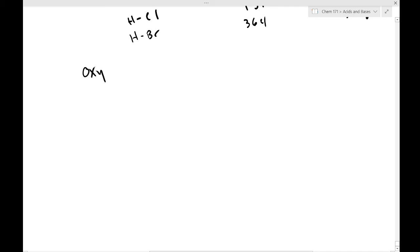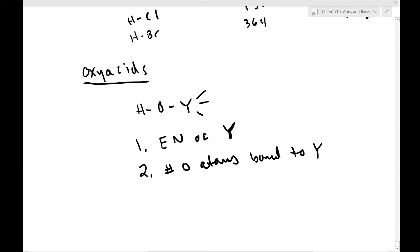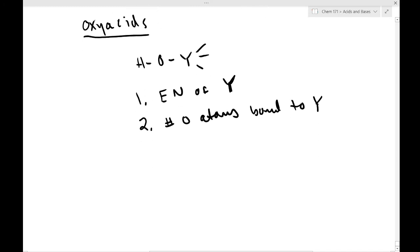So that's binary acids. What about oxy acids? Oxy acids have this general structure, H O Y, and the Y can be connected to any number of things. The two factors that are affecting the acid strength for an oxy acid are number one, the electronegativity of Y. Electronegativity of Y. So how much Y wants to gobble up the electrons. And number two, the number of oxygen atoms bound to Y. So the more, yeah, we'll get to that in a second. Let's go through number one first.